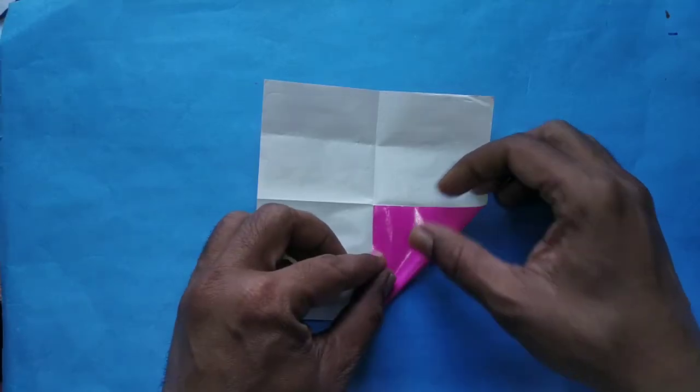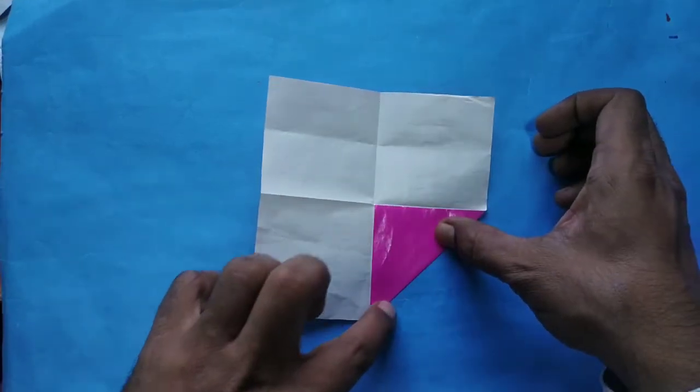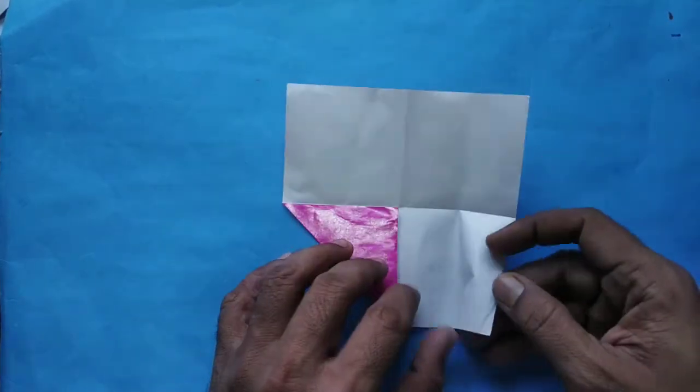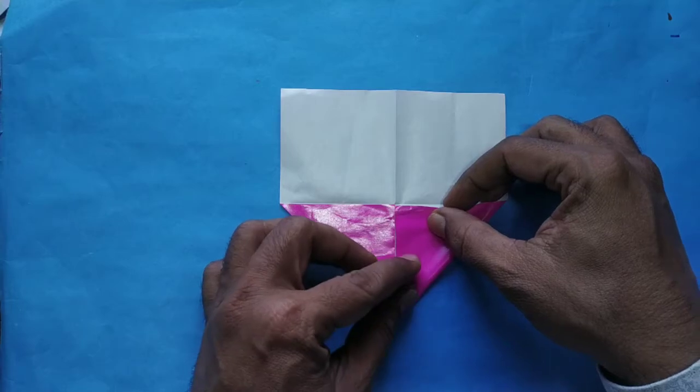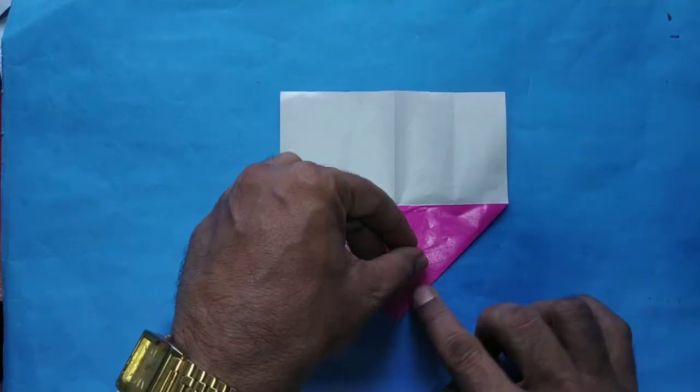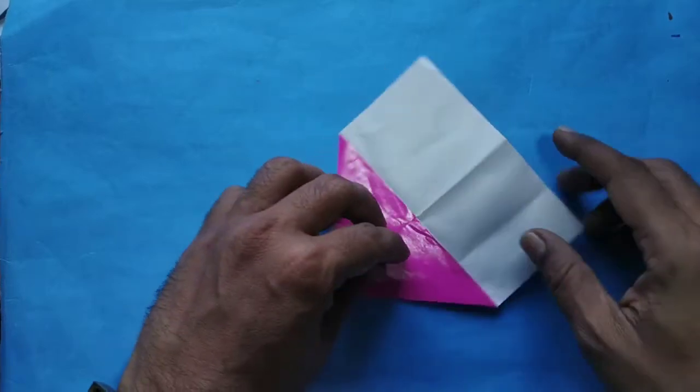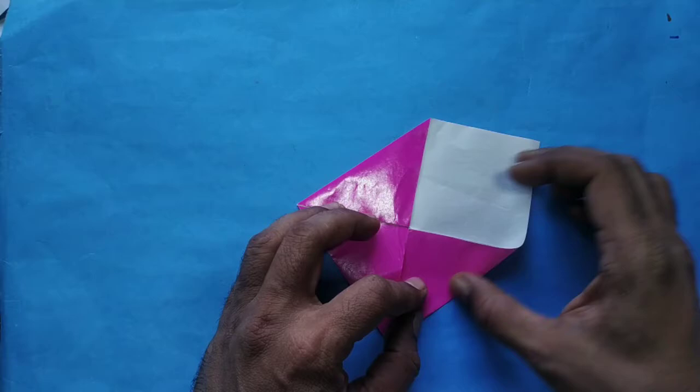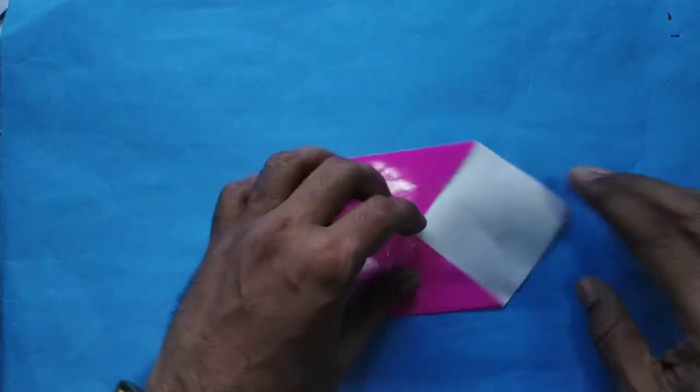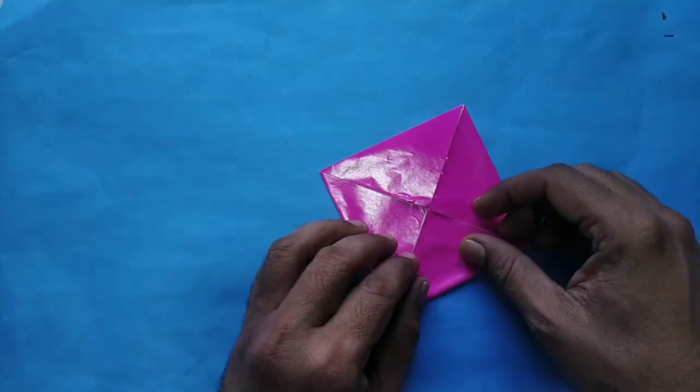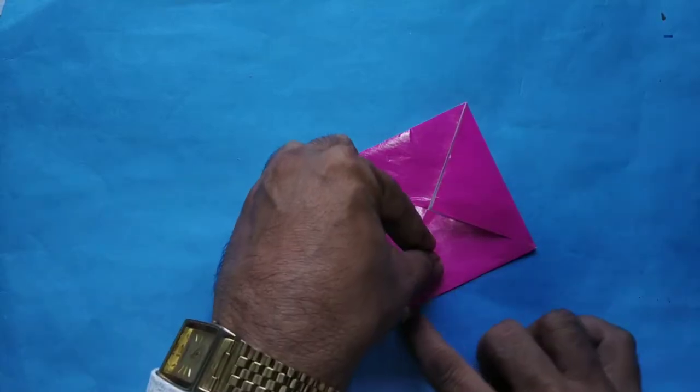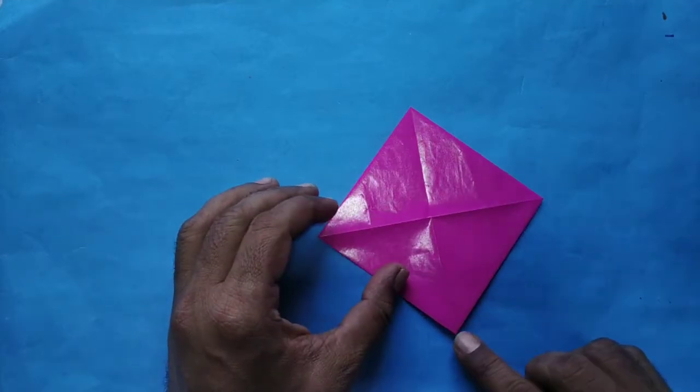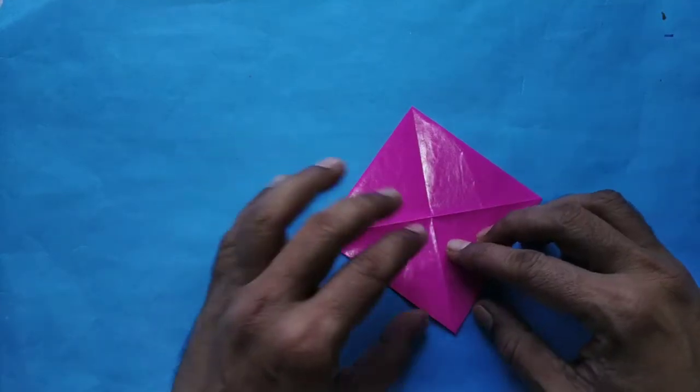Fold properly with your thumb or first finger, like this. Then do the second side also in the same manner. Third also, fourth also. Then turn it. Again four corners will be there, bring them to the center.